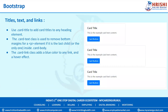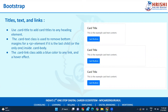Use dot card-title to add a title to your heading element. The dot card-text class is used to remove the bottom margin for a paragraph element if it is the last or only element inside the card body. So dot card-text removes the bottom margin for your paragraph if it is the only element or the last child inside the body.